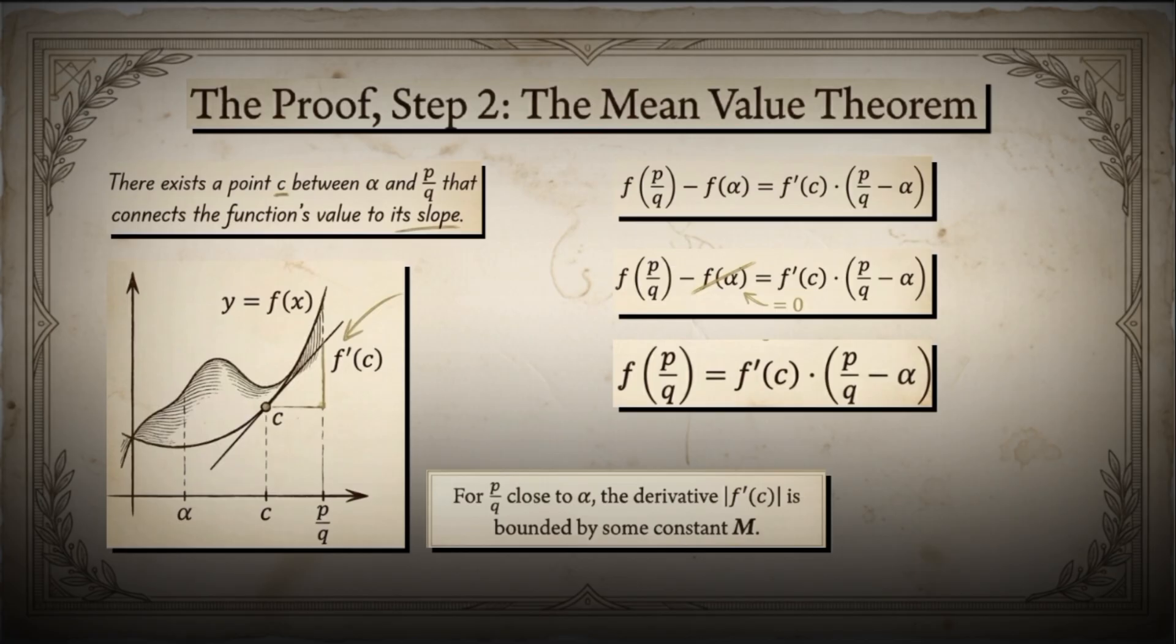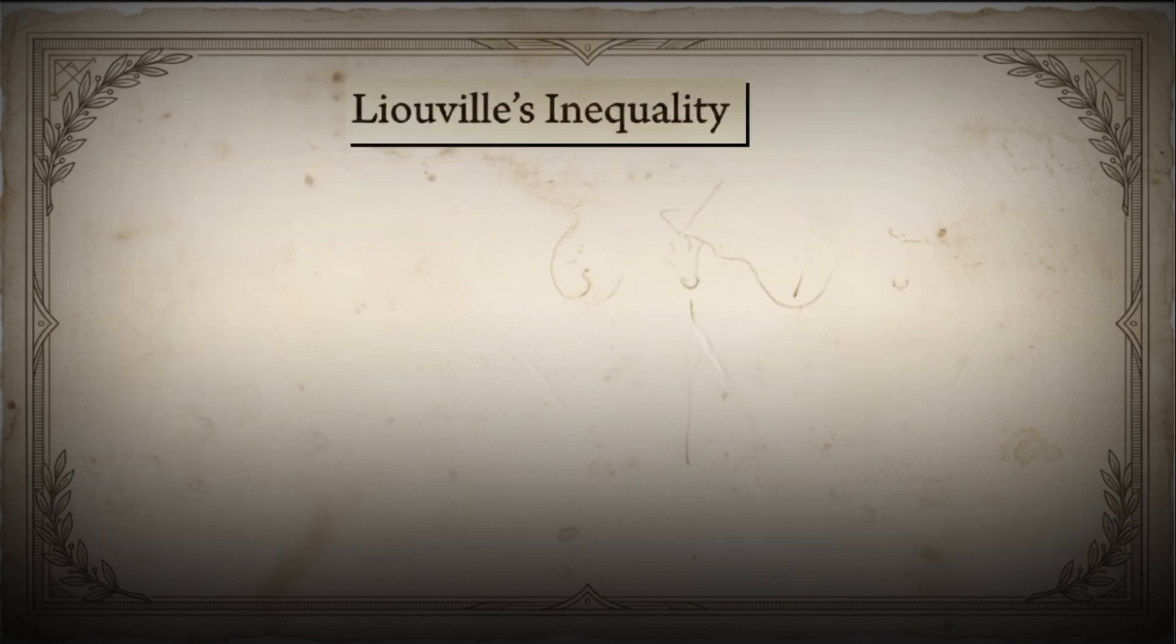Specifically, the absolute value of f prime of c is less than or equal to some constant m, where m is greater than 0. Now we combine everything.